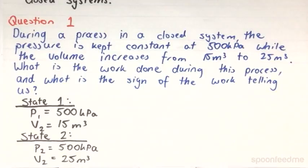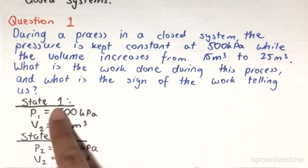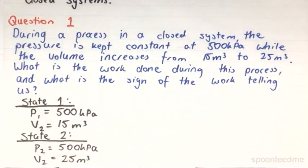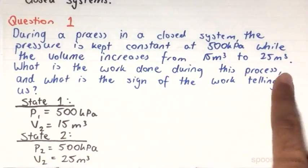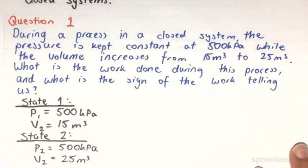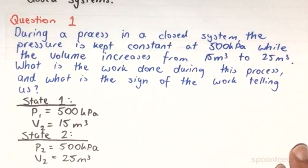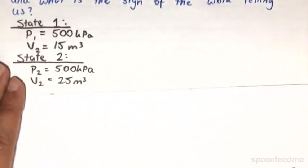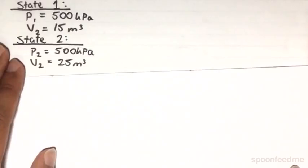And at state 2, we have the pressure to be constant, so it's going to be equal to 500 kilopascals. And our volume is going to be increased to 25m3. So now we already derived the work for the constant pressure process.